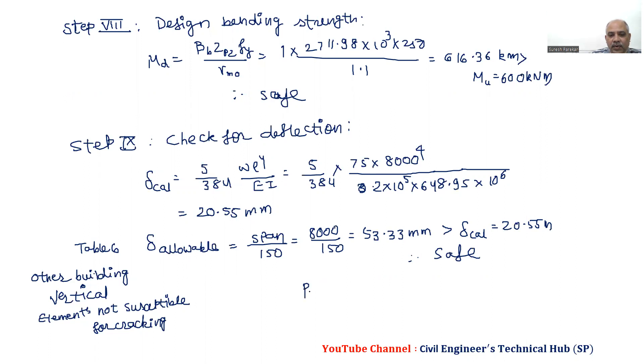So we can write: Provide ISMB 550 at 103.7 kg per meter.